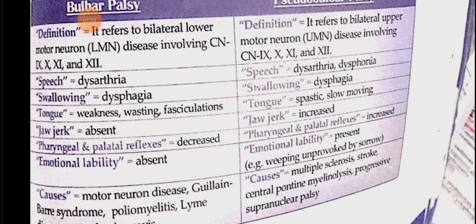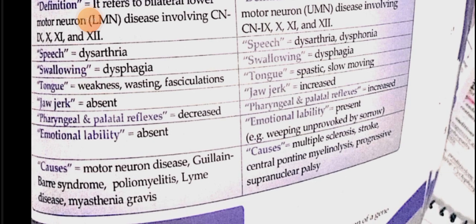In bulbar palsy, the nerves involved are mostly cranial nerves 9, 10, 11, and 12. When speech is involved, there is dysarthria; there is also dysphagia and tongue problems. Pharyngeal reflexes are reduced. The key difference to remember: in amyotrophic lateral sclerosis, both UMN and LMN signs appear; in progressive muscular atrophy, lower motor neuron signs appear; in primary lateral sclerosis, upper motor signs appear; in progressive bulbar palsy, cranial nerve nuclei signs appear.